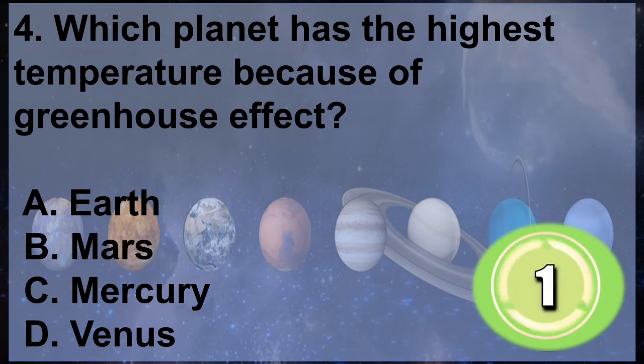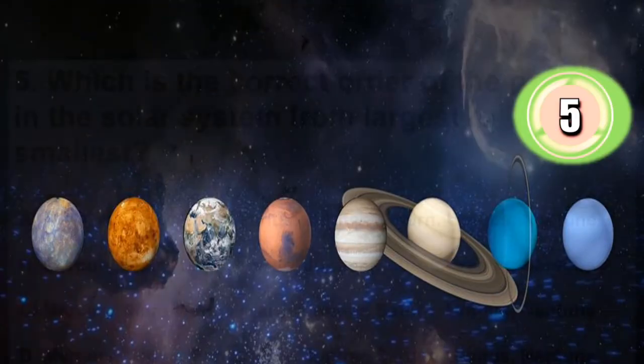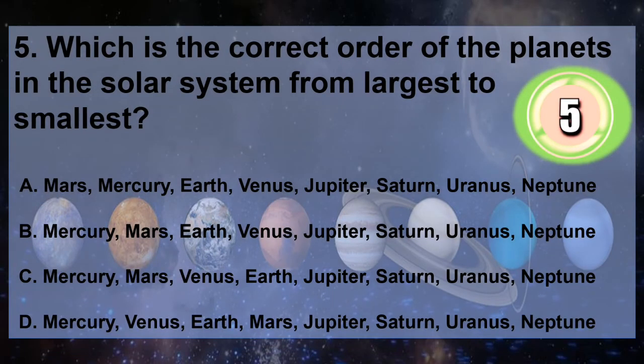Question 5: Which is the correct order of the planets in the solar system from largest to smallest? A. Mars, Mercury, Earth, Venus, Jupiter, Saturn, Uranus, Neptune. B. Mercury, Mars, Venus, Jupiter, Saturn, Uranus, Neptune. You have 5 seconds to answer.